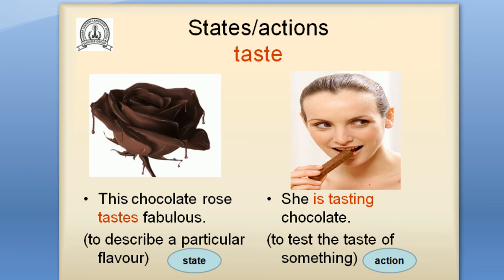Verb: taste. When you describe a particular flavor, it's a state verb. When you test the taste — when you try to find out the taste of something — it's an action. For example: 'This chocolate rose tastes fabulous' — I describe the particular flavor, so it's a state. 'She is tasting chocolate' — she is trying to find out about the taste, testing it, so it's an action verb.